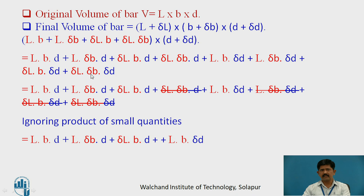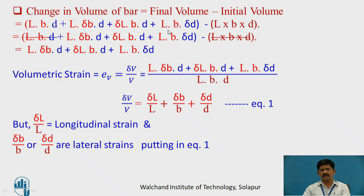Now, delta D, delta L, and delta B are smaller values. When smaller values are multiplied by again smaller values, they become still smaller. So ignoring the product of small quantities, we get L·B·D plus L·delta B·D plus delta L·B·D plus L·B·delta D. The change in volume of the bar is final volume minus initial volume. Subtracting L·B·D, the change in volume is: L·delta B·D plus delta L·B·D plus L·B·delta D.